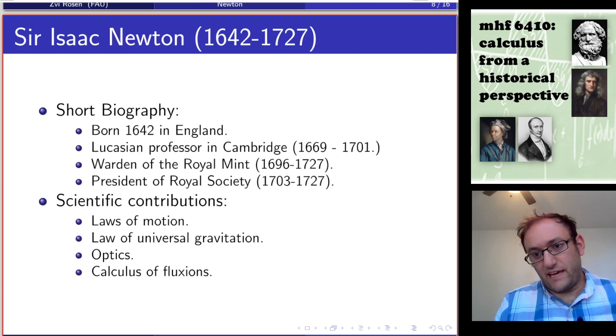Let's go into a closer look at Newton's life. Newton was born in 1642 in England. He became the Lucasian professor in Cambridge in 1669, holding that post until 1701. It's a very prestigious mathematics position. Then he became the Warden of the Royal Mint in 1696, a post he held until his death. And in 1703, he became the president of the Royal Society, making him a huge figure in the administration of science in England.